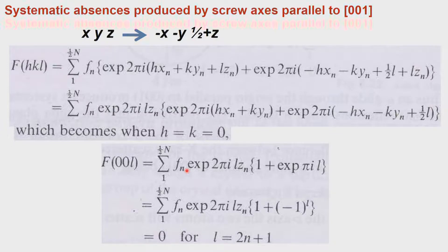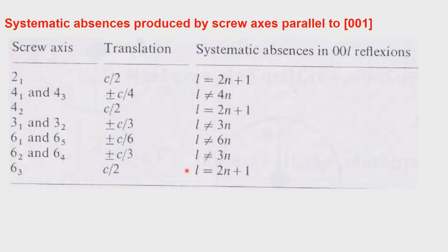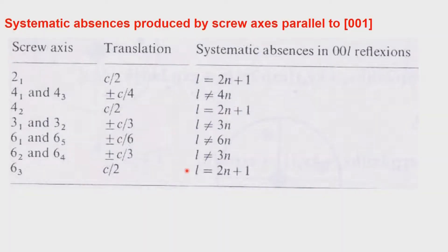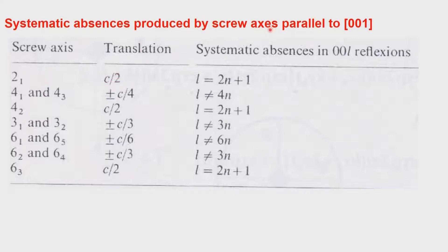When h and k are both zero, the expression for F(00l) reduces to: sum from 1 to n/2 of f_n × exp(2πi·lz_n) multiplied by [1 + exp(πil)]. This equals 1 + (−1)^l, so whenever l is odd, F(00l) will be absent. The systematic absences associated with the screw axis essentially affect only the axial reflections — the reflections along the definition of the axis, either H, K, or L. For a 2₁ screw axis with translation c/2, the systematic absence is l = odd.